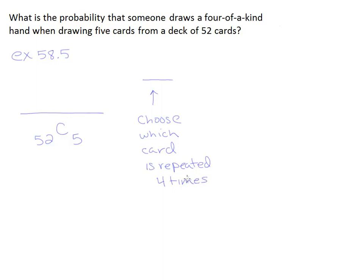For example, in my mind right now, I'm thinking, let's repeat the seven four times. I have to choose that card. Well, how many choices did I have for that? How many different types of cards are there to choose that card from?